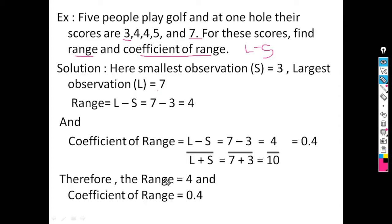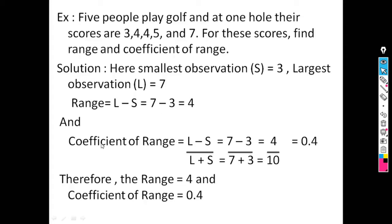Therefore, for this example, range is 4 and coefficient of range is 0.4. Since the data is of individual type, we use the formula range equals L minus S, and coefficient of range equals (L minus S) divided by (L plus S).